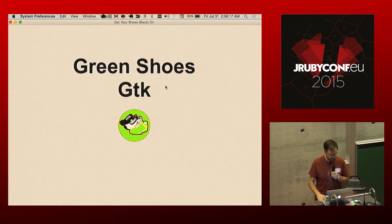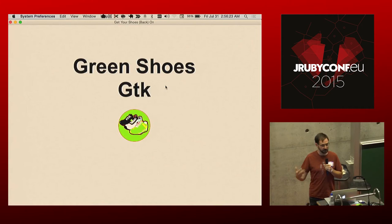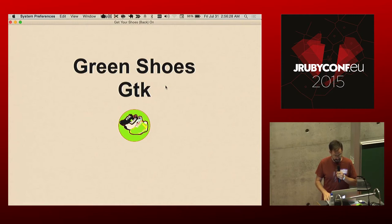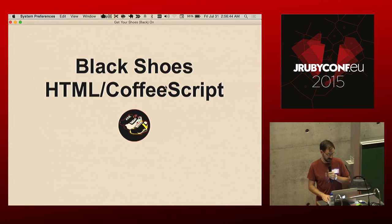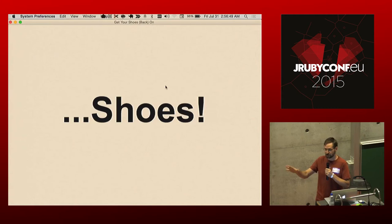Let's take a look at the ecosystem that developed after Why left. The original Shoes was written with native bindings in C and it worked across all of these platforms. And a lot of different people sort of fragmented off from there. So we had a version called Green Shoes built on GTK, there was a QT version, SWT, HTML versions, that implemented this DSL, an SWT version, a CoffeeScript version. So many different versions of Shoes fractured off, and all of them took the DSL that Why had created and provided it with a different backend.